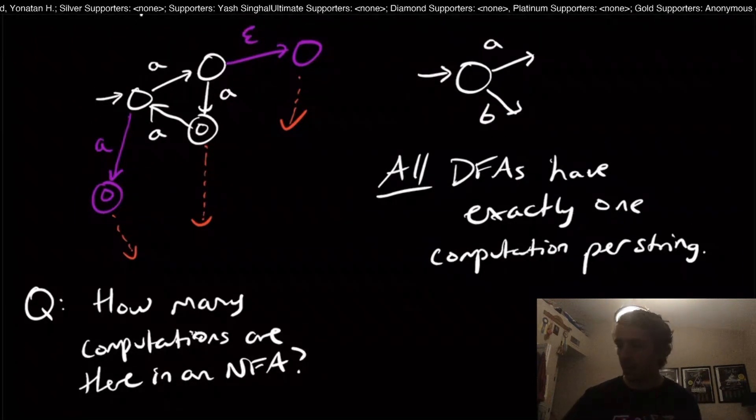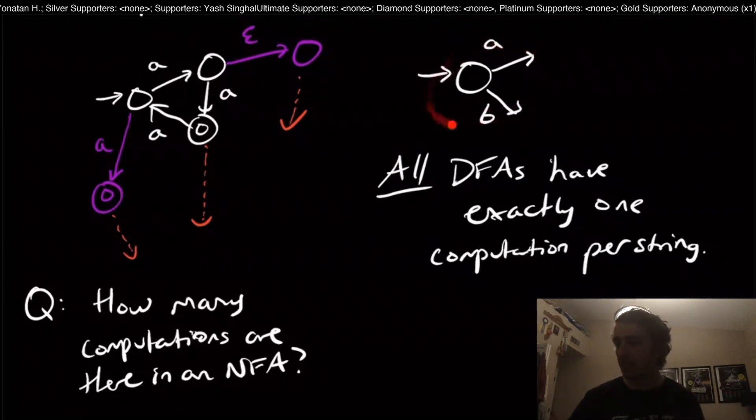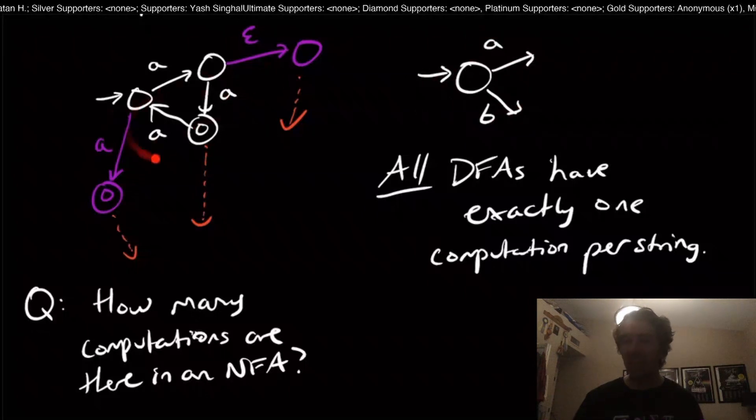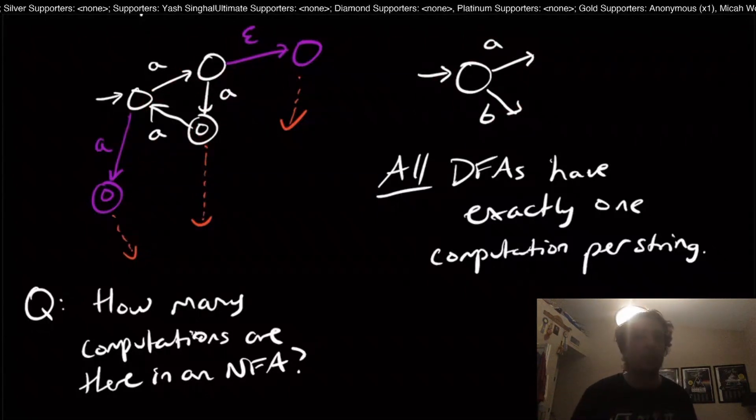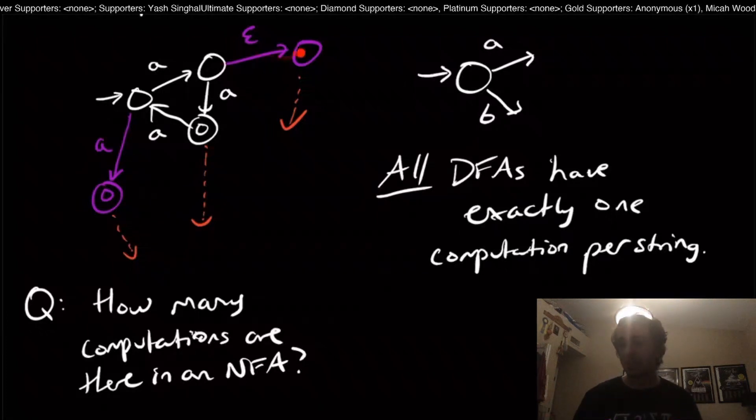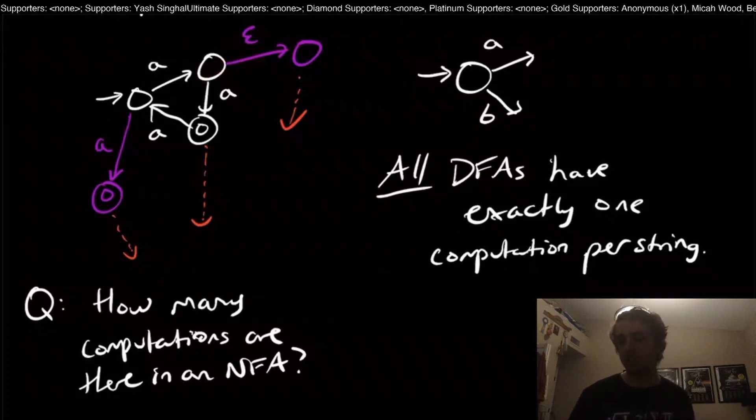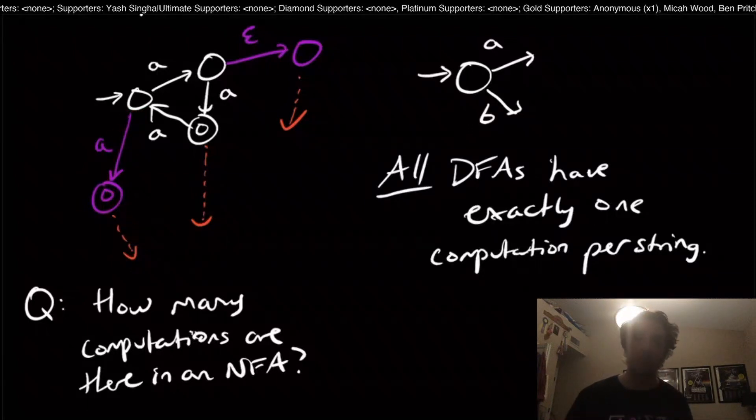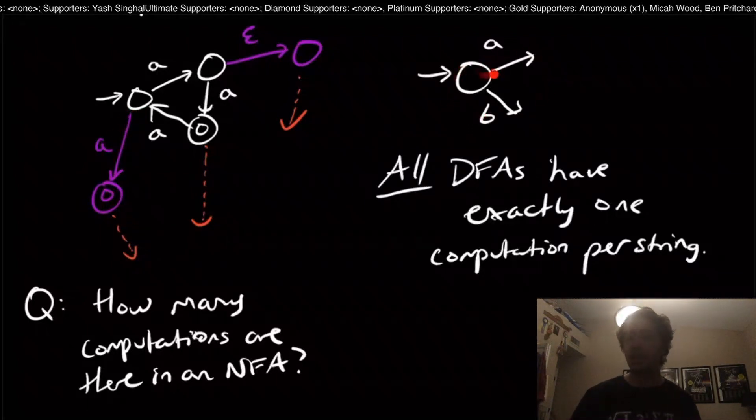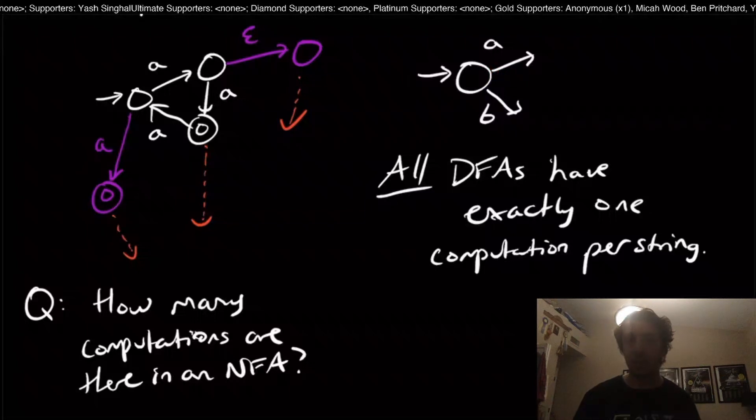Note, right at the very beginning that if we have a DFA, it already is an NFA, because the NFA doesn't have to do anything non-deterministically. We don't have to have epsilon transitions, multiple transitions, or leave them out. A DFA just happens to have a particular structure.